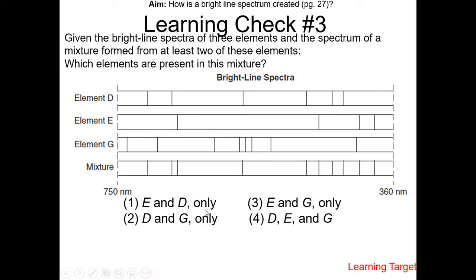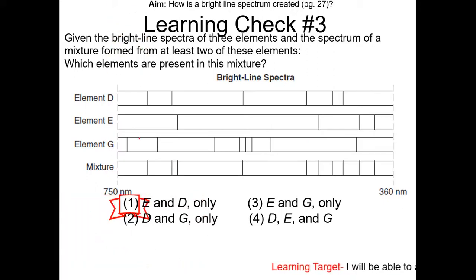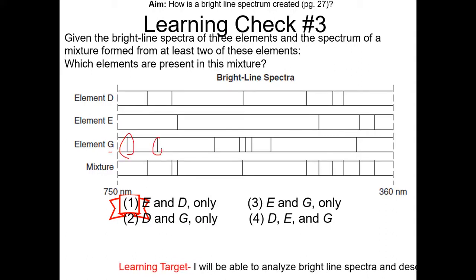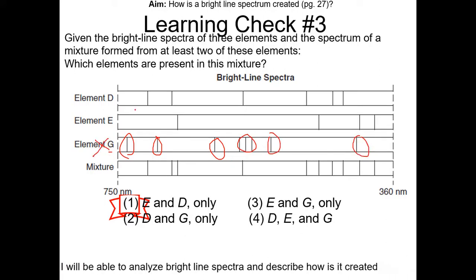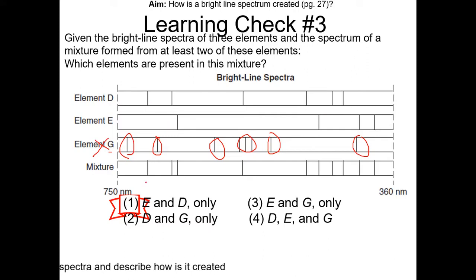The answer is one. In order for an element to be in the mixture, all the lines of the element must be in the mixture. For example, for G, these lines are not in the mixture, so G is not in the mixture. If we do the same for D and E, you notice that all those lines are in the mixture. Therefore the answer is one — D and E are in the mixture.